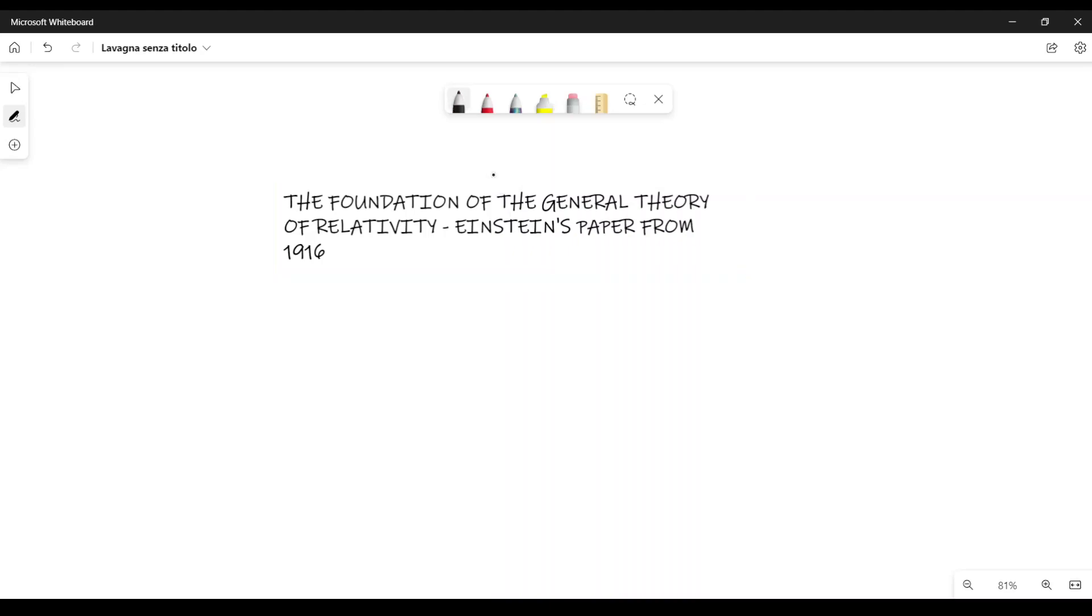Einstein in his paper also shows a fundamental property of the determinant of the fundamental tensor, which is the metric tensor. The determinant of the product between G mu alpha and G alpha nu is equal to, due to the properties of determinants, the determinant of G mu alpha times the determinant of G alpha nu.